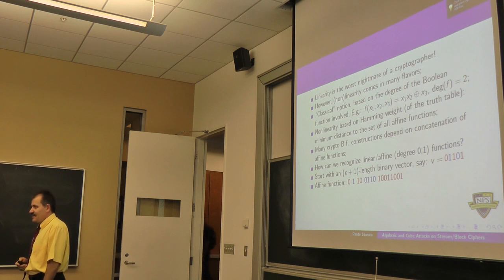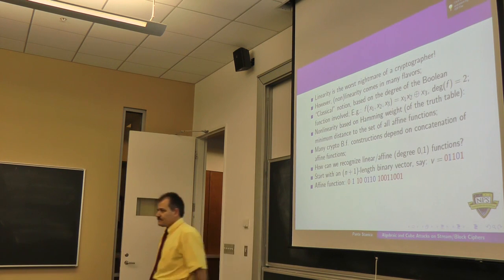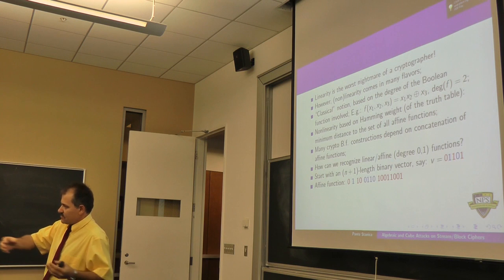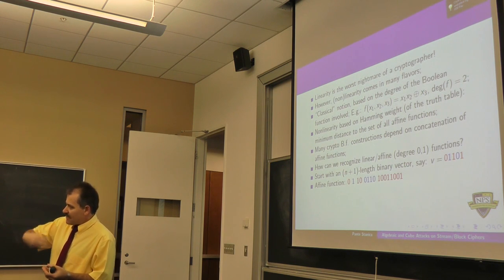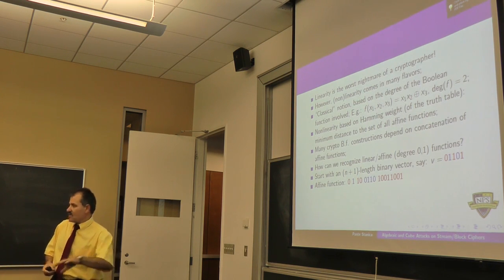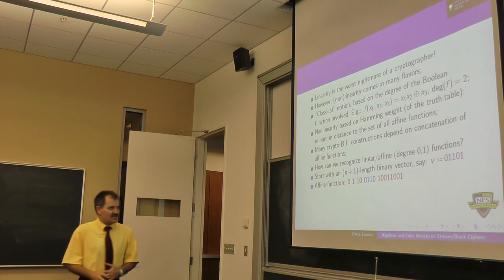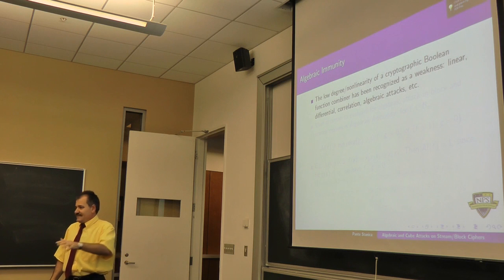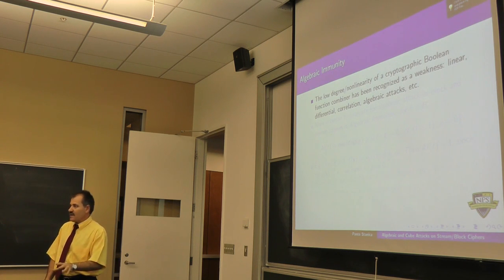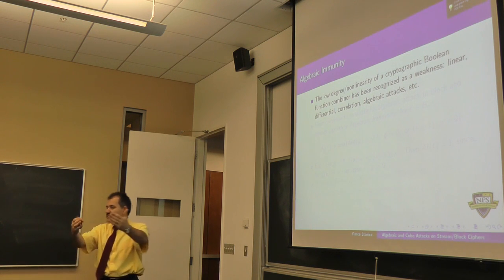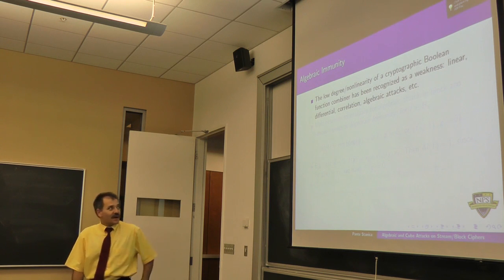The truth table is the output of the function applying to every single tuple in lexicographic order starting with 0000. Somebody might ask about quadratic - actually, I have a way to recognize any degree function. It's going to be a little more complicated, not as simple, but recognizable. We can come up with the degree by looking at the truth table.